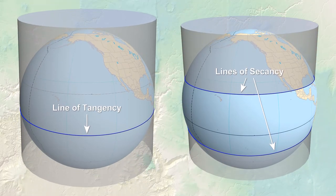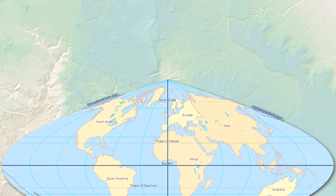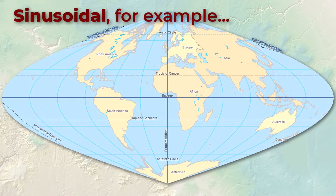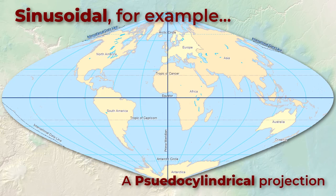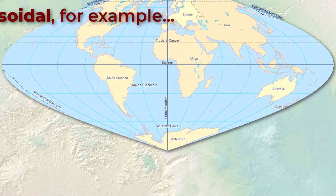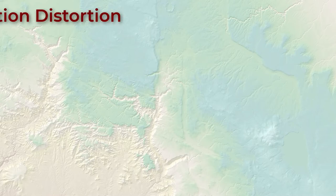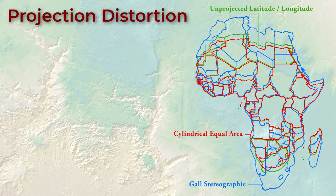Any projection surface can be either tangent or secant, depending on whether the projection surface only touches the surface of the planet or actually intersects it. There are also some mathematical projections that are conceptually similar to planes, cones, and cylinders but don't exactly fit that definition.